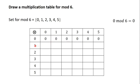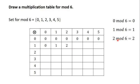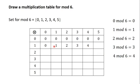Let's move on to the next row. 1 times 0 is 0; 0 mod 6 is 0. 1 times 1 is 1; 1 mod 6 is 1. 1 times 2 is 2; 2 mod 6 is 2. 1 times 3 is 3; 3 mod 6 is 3. 1 times 4 is 4; 4 mod 6 is 4. 1 times 5 is 5; 5 mod 6 is 5.